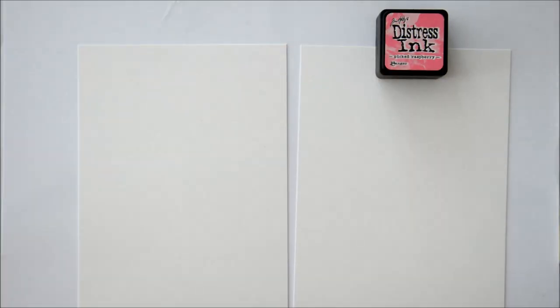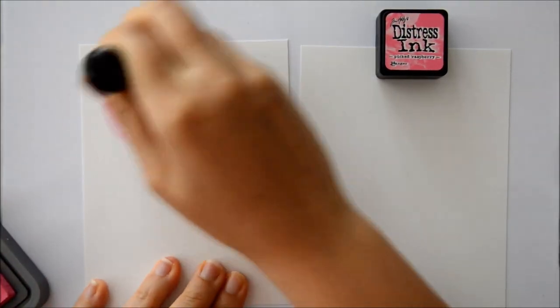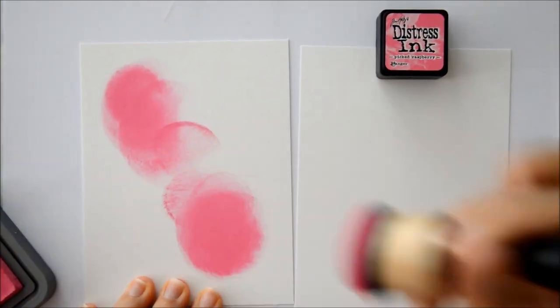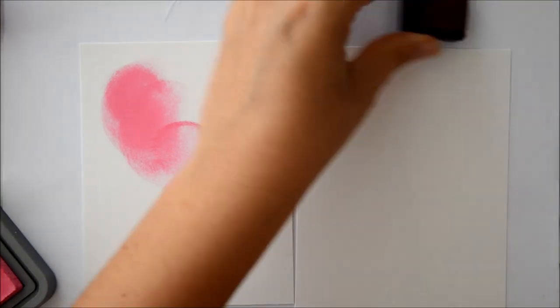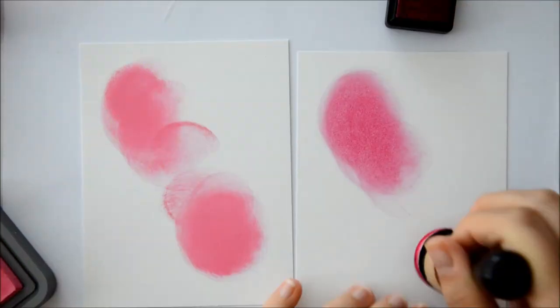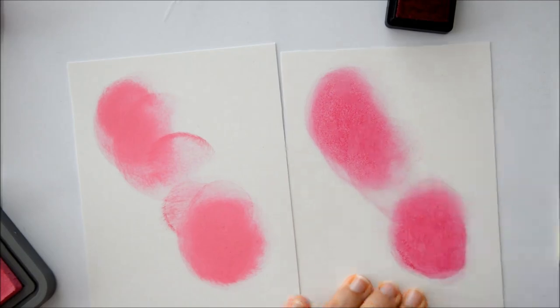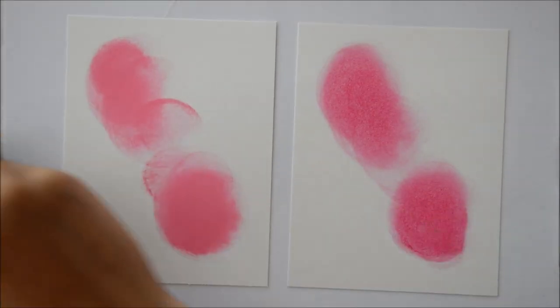As a base for my backgrounds, I decided to use Strathmore Bristol Smooth Cardstock because this is a wonderful support when you want to use distress inks and oxides. They blend really nicely on top of it, and to make the comparison more meaningful, I decided to use the same colors of distress inks and oxides and also to lay them down in the same way.